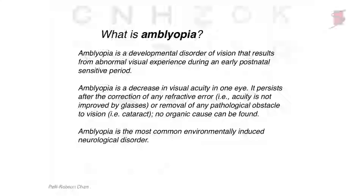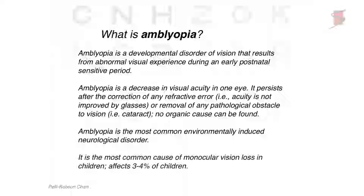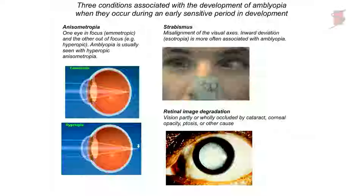Amblyopia is the most common environmentally induced neurological disorder, and the most common cause of monocular vision loss in children, affecting about 3 to 4 percent of children in the U.S. There are three general conditions most commonly associated with amblyopia when they occur early in postnatal life. One is anisometropia — basically a difference in refractive error between the two eyes — more commonly associated with far-sighted hyperopic refractive errors than myopic ones.